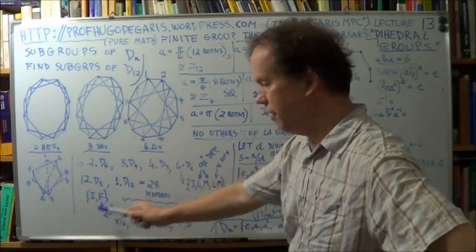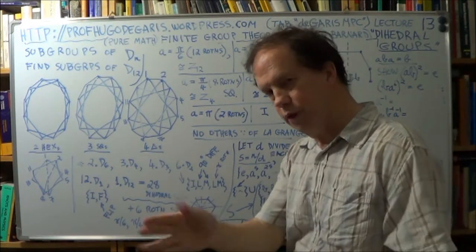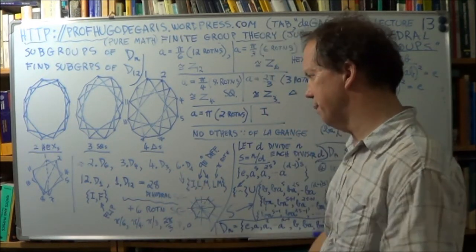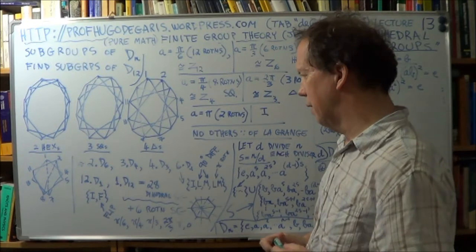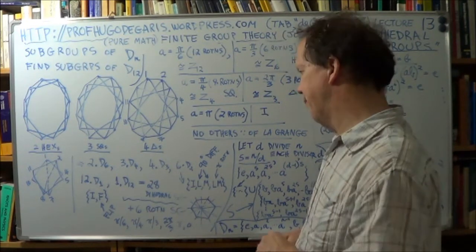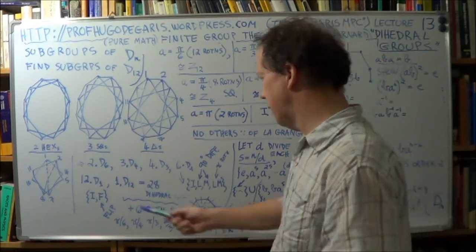So that F there is any one of 12 flip operators, flip symmetry operators. Okay, so add all those up.